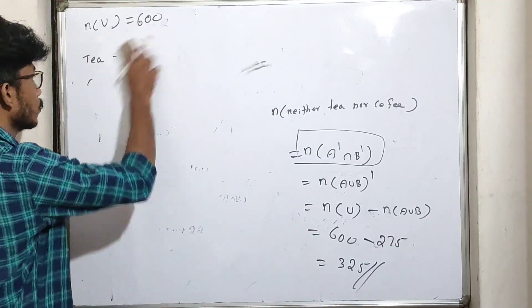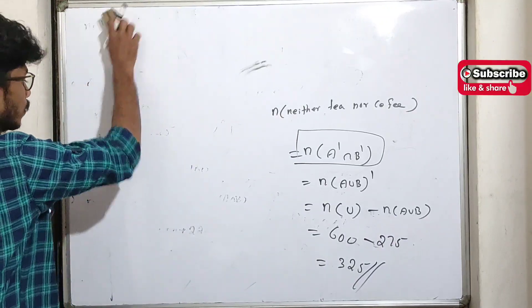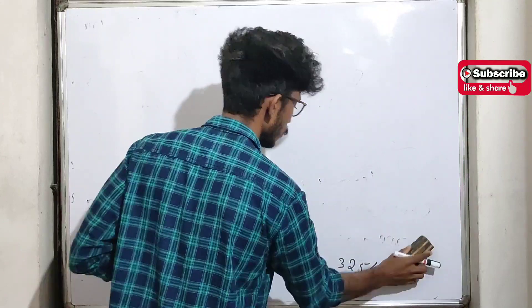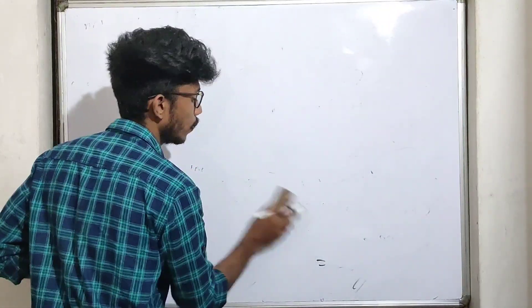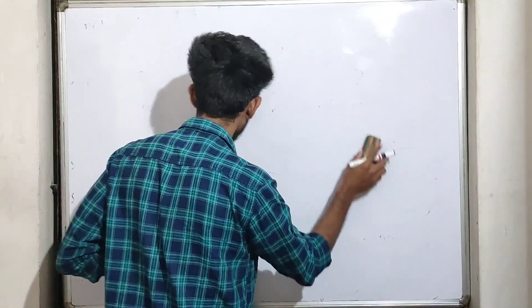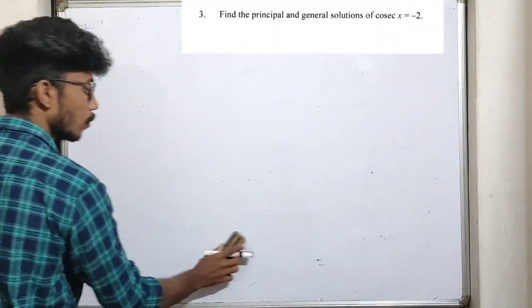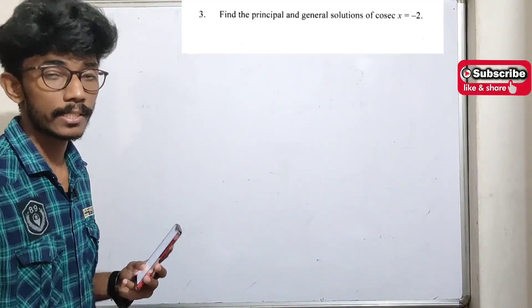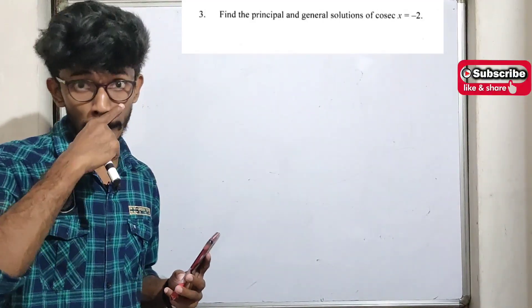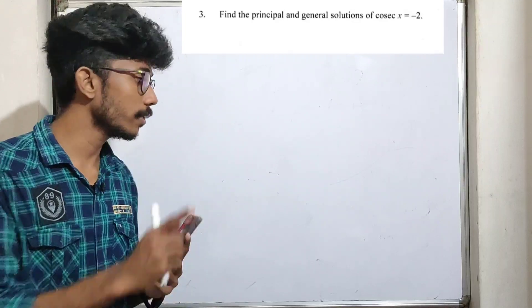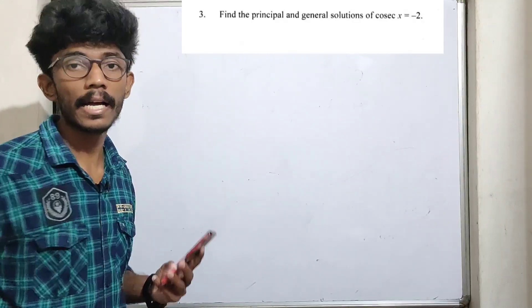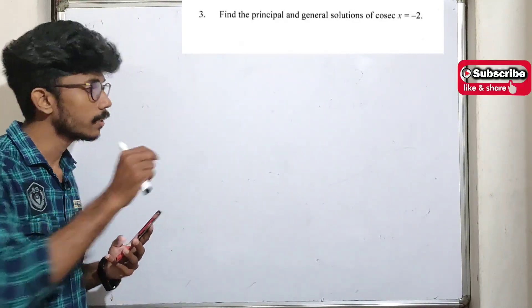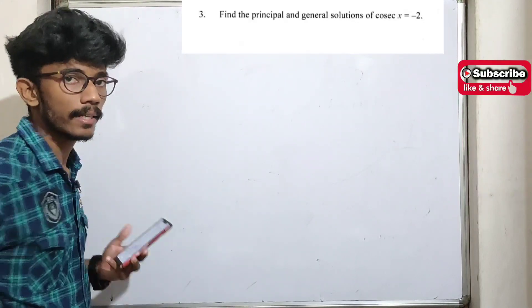Let's go to the principle solution and general solution. If you want to use the quadrants, it's called sign conversion.